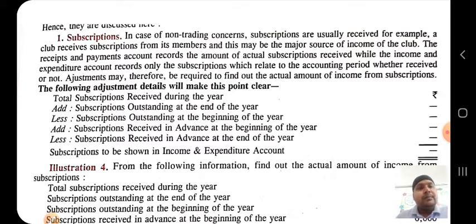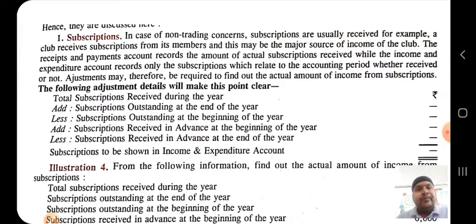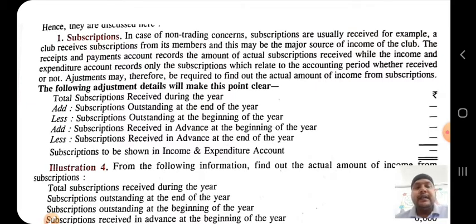When we record subscription in the receipts and payment account, during the year — that is, in the current year — however much subscription is received, we record it on the debit side of the receipts and payment account. But when we talk about the income and expenditure account, we record only that amount of subscription which relates to the current accounting period, whether received or not. So the actual subscription received goes into receipts and payment account, and what should have been received for the current year goes into income and expenditure account.